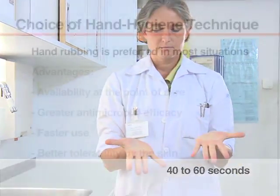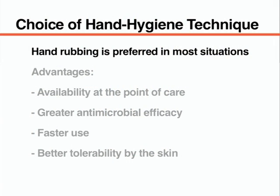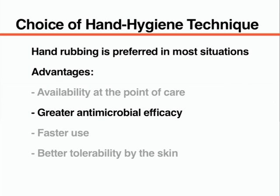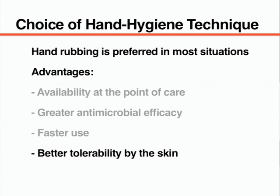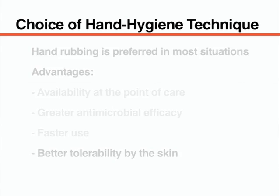Hand rubbing with an alcohol-based formulation is the preferred hand cleansing procedure in most clinical situations. The main advantages of alcohol-based hand rubs as opposed to soap and water include availability at the point of care, greater antimicrobial efficacy, faster use, and better tolerability by the skin.